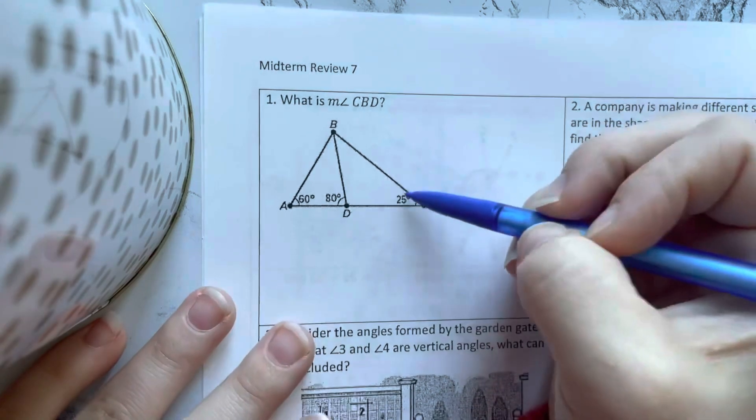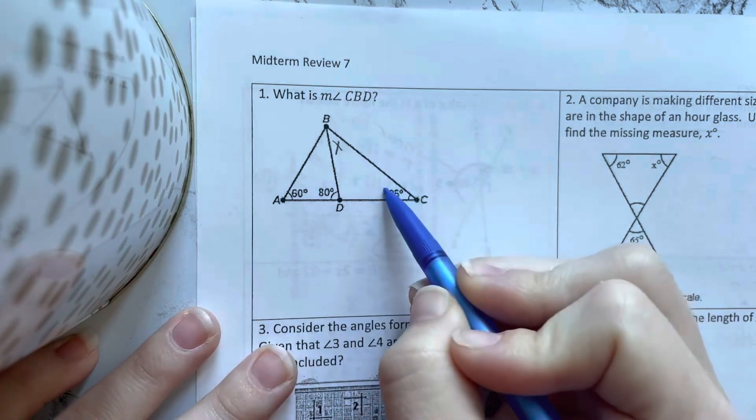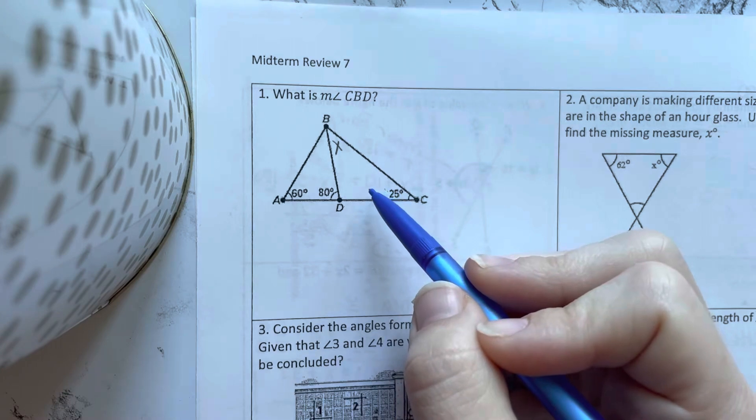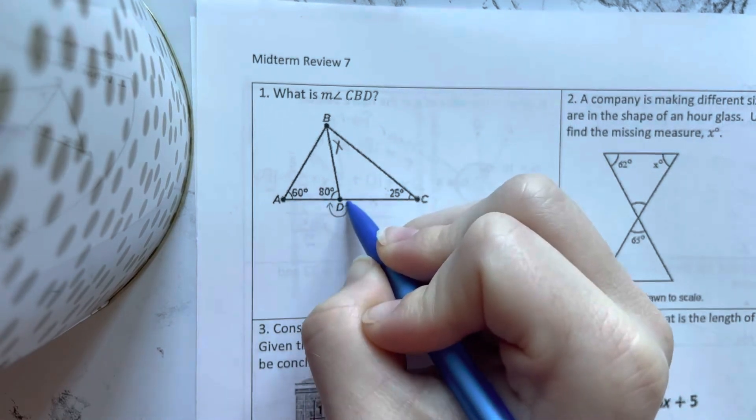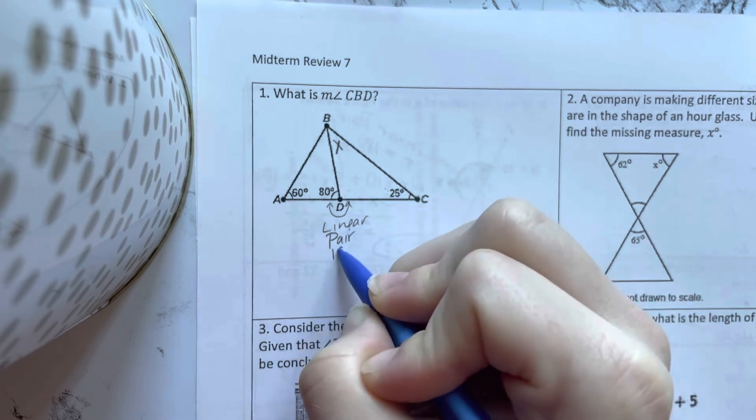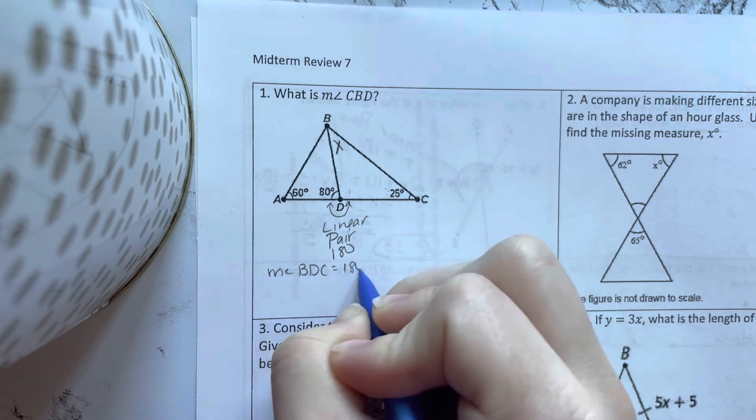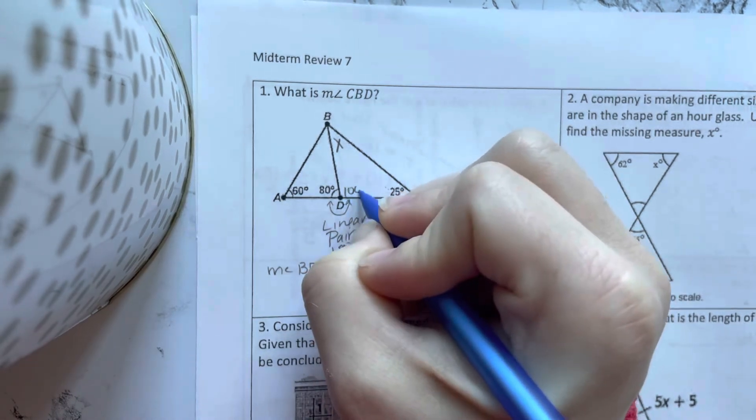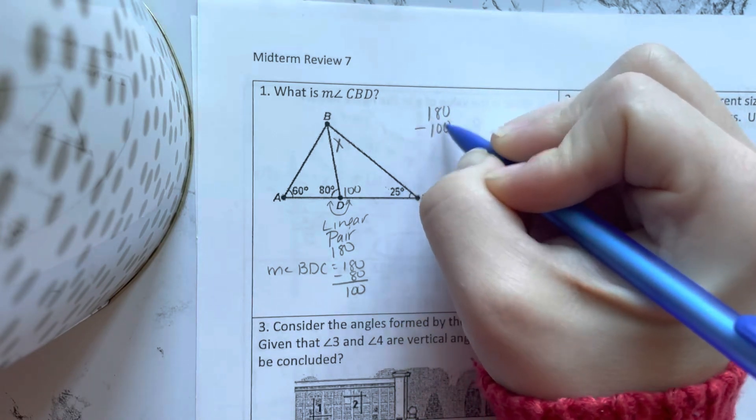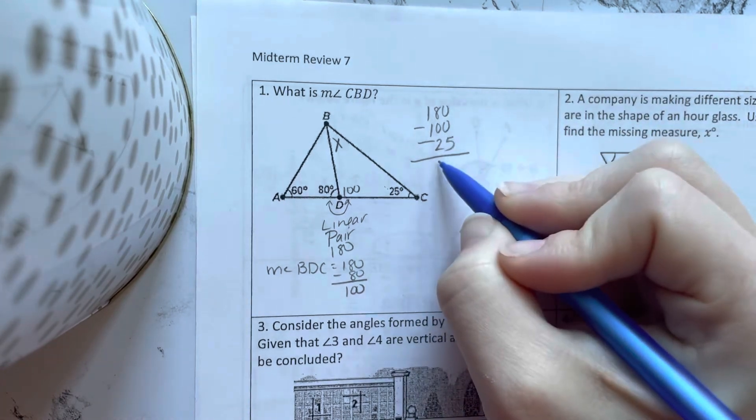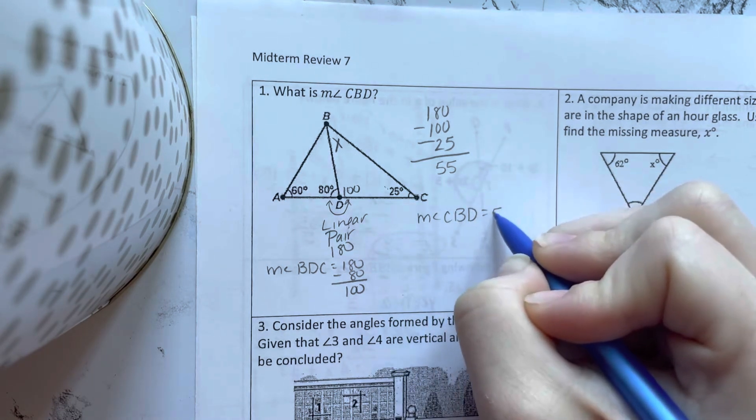All right, on the back, find the measure of angle CBD. So I'm looking for this. So let's figure out what we know. I know here's a triangle here. I know this is 25. I can use that these are a linear pair, these two angles here, which means they add to 180. So if I want to find this angle, which would be the measure of angle BDC, 180 minus 80 would give me 100. And then I have a triangle here and all three angles in the triangle add to 180. So I can do 180 minus 100 minus 25. And that's going to give me 55 for that angle there. So the measure of angle CBD is 55 degrees.